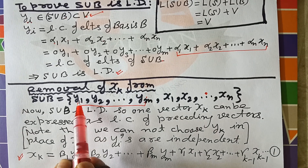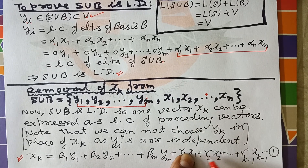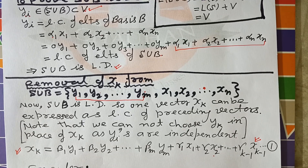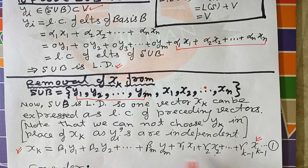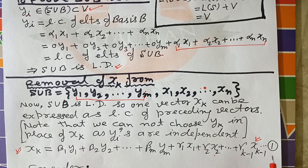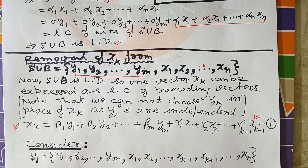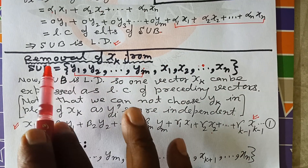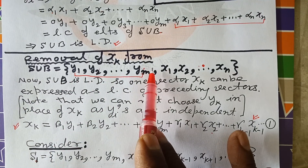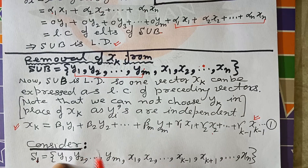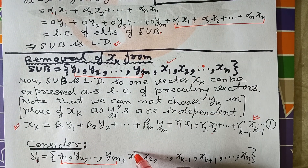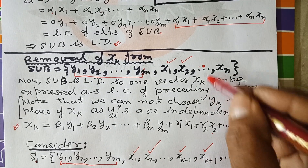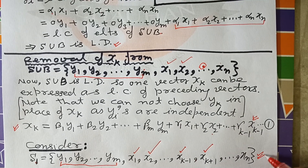So xk = β1·y1 + β2·y2 + ... + βm·ym + γ1·x1 + γ2·x2 + ... + γ(k-1)·x(k-1). This is equation (1). We now define a new set S1 = (S∪B) minus {xk}, i.e., S1 = {y1, y2, ..., ym, x1, x2, ..., x(k-1), x(k+1), ..., xn}. The theorem now proceeds on the basis of S1.